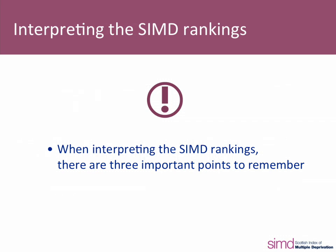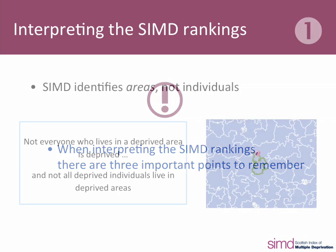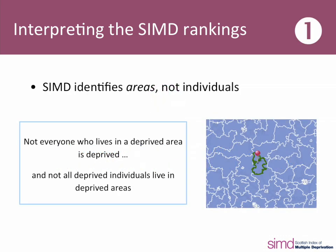When interpreting the SIMD rankings, there are a few important points to remember. First, the SIMD identifies areas, not individuals. So not everyone who lives in a deprived area is deprived, and not all deprived people live in deprived areas.